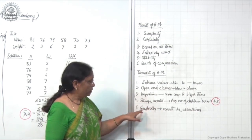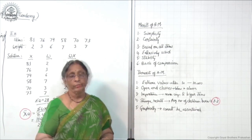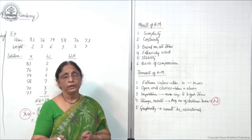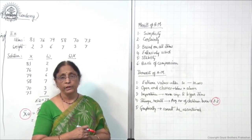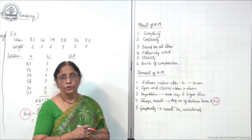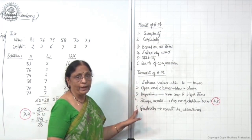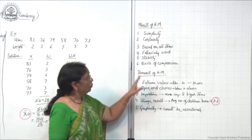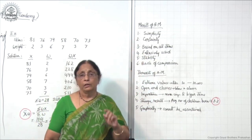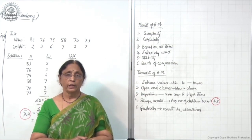The fifth demerit is that graphically it cannot be ascertained. In the case of mean, you have to do the mathematical calculation, and graphically you cannot show arithmetic mean as you can show median or mode. So in this way, mean has certain drawbacks, but still in most cases it is considered a very easy and accurate method.